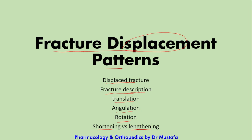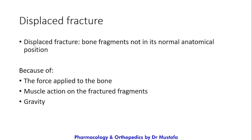In a displaced fracture, the bone fragments are not in their normal anatomical position. The fracturing force and other factors cause the bone fragments to deviate from their normal anatomical position — that is why we call it a displaced fracture. The force applied to the bone that caused the fracture also leads to displacement of the fracture fragments.